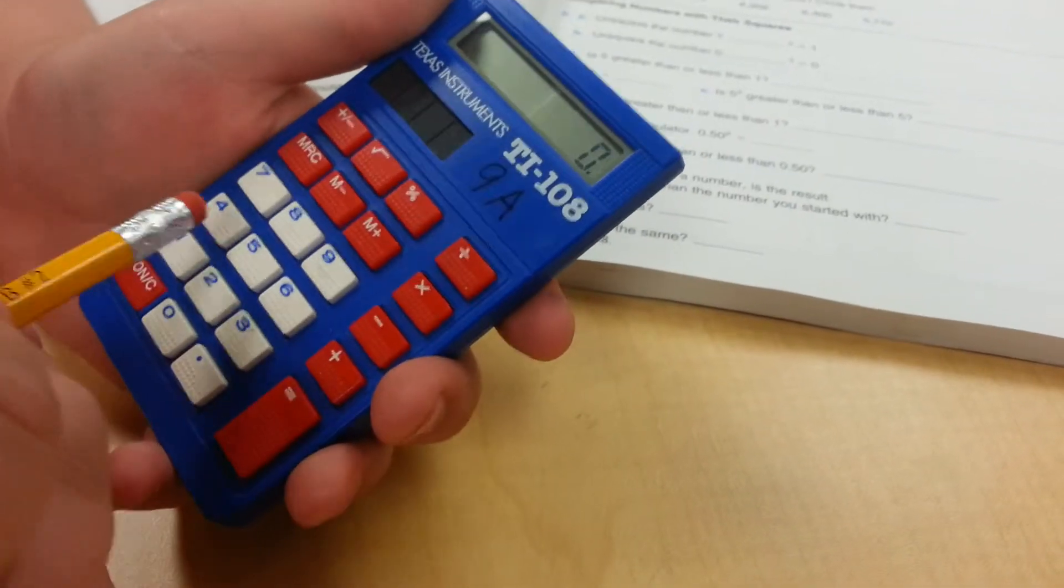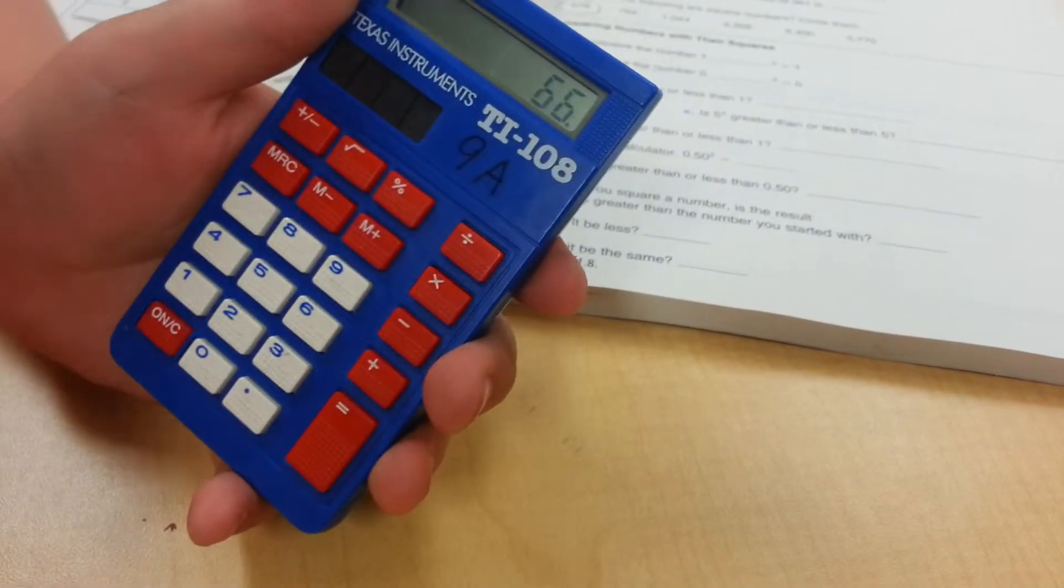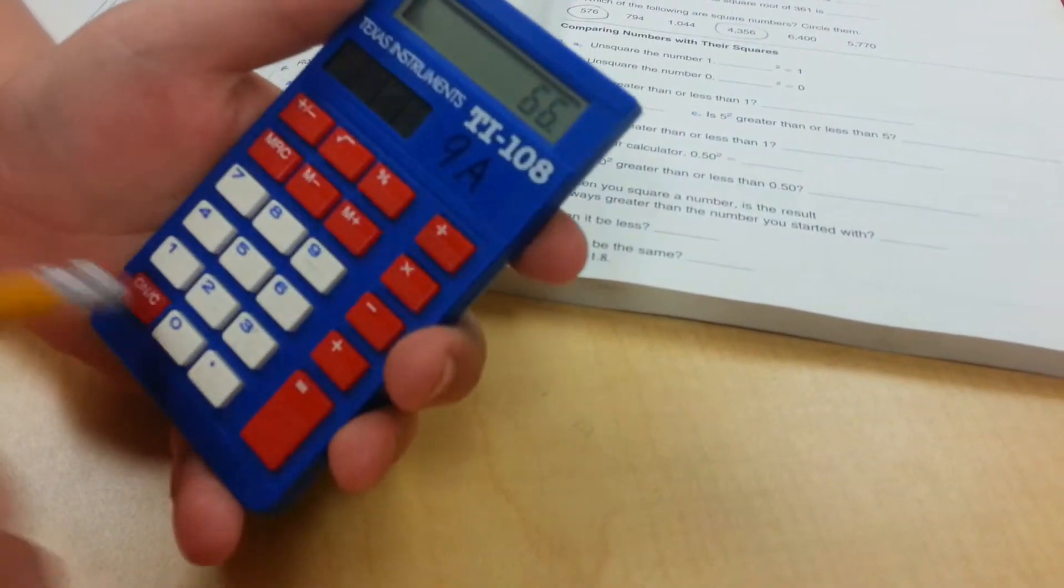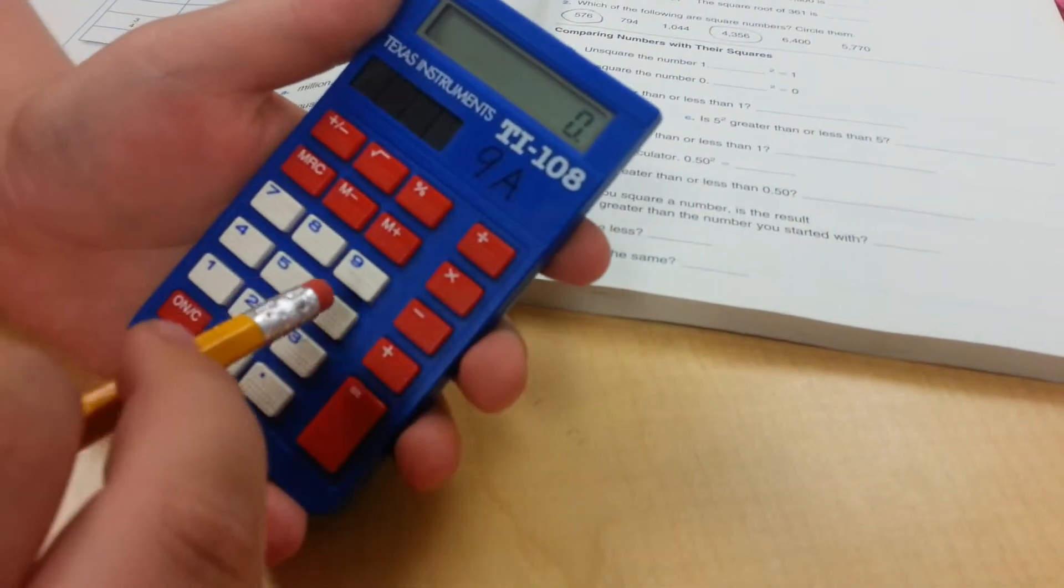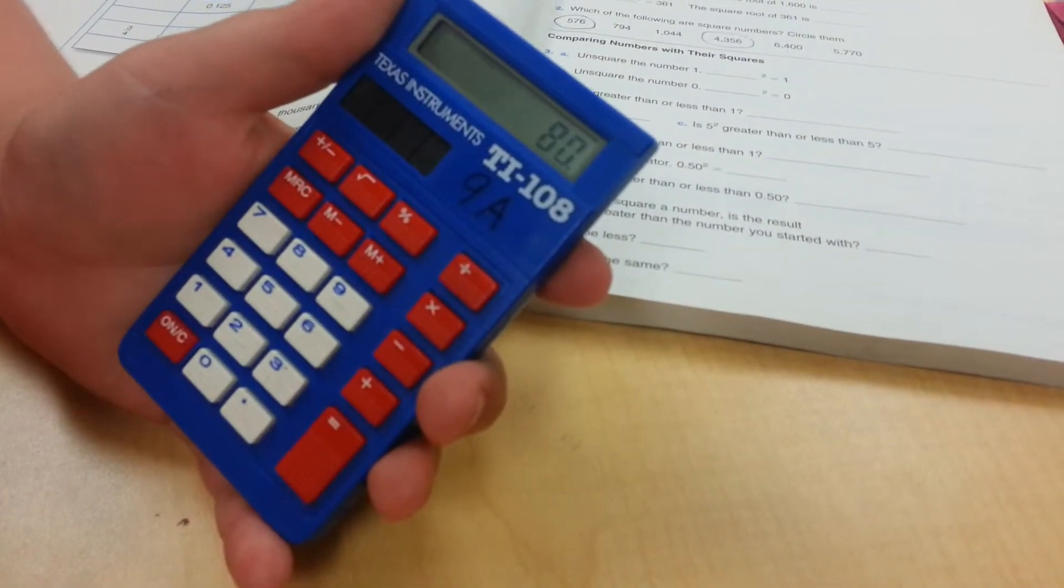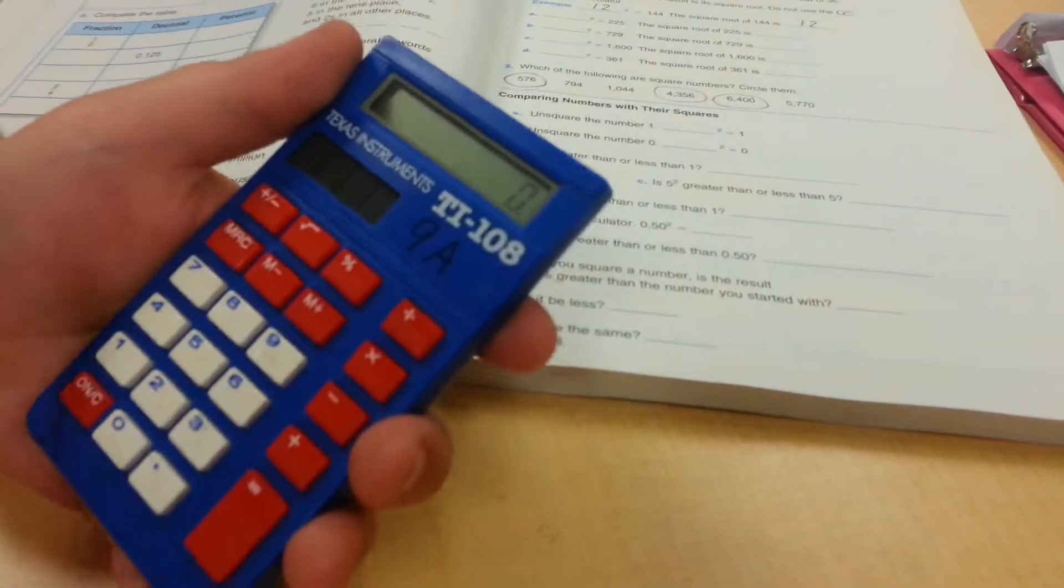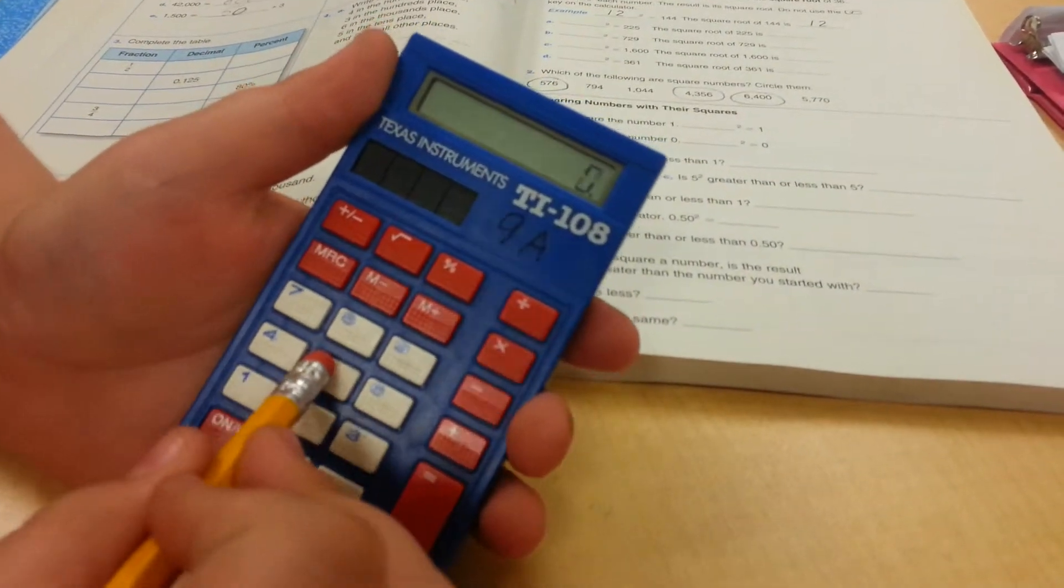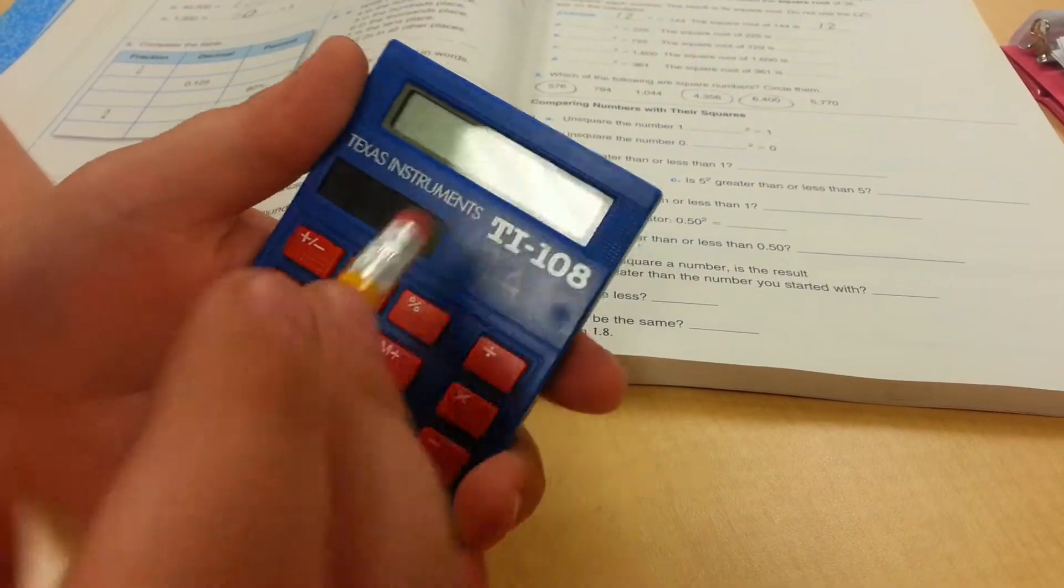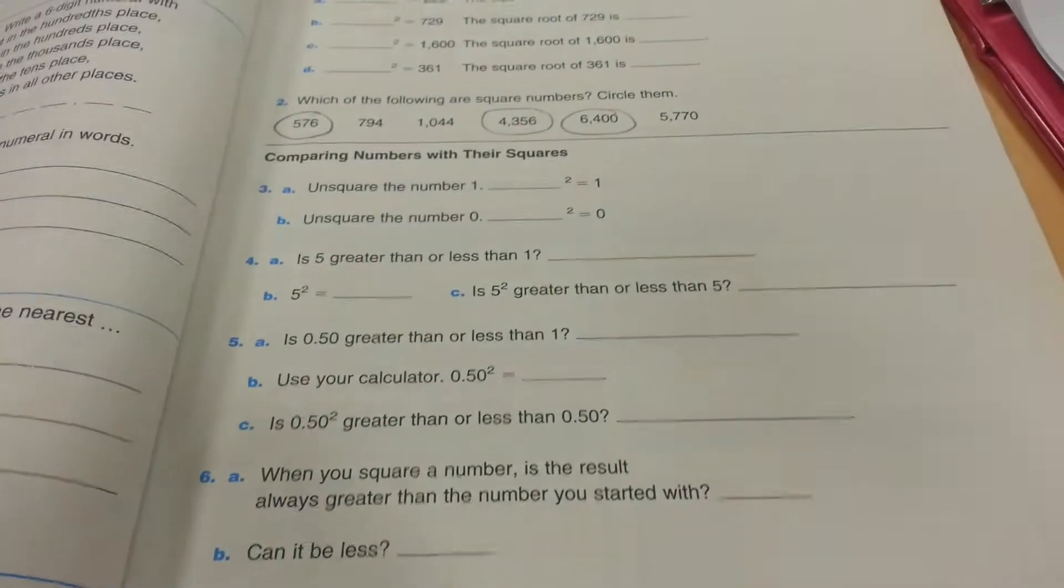Now we do 6,400. I don't think that one works. 6,400 square root key. 80. Oh, it does work. 8 times 8 is 64. And then 5,770 square root key. Nope. This is really good. This goes really fast. Brandon, you ready to do the bottom?